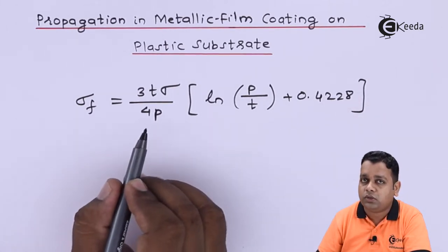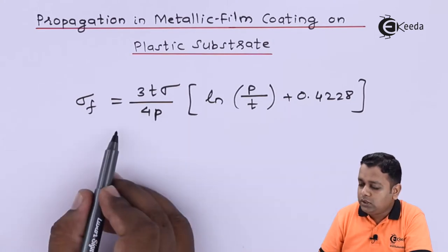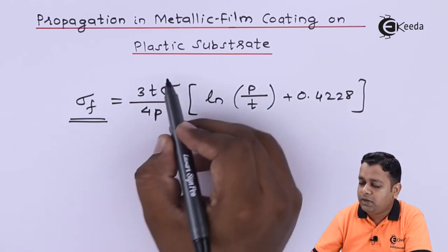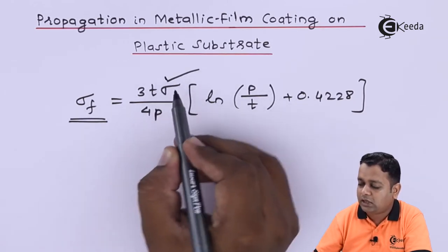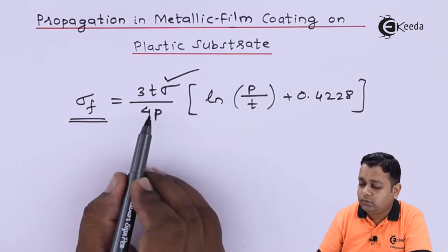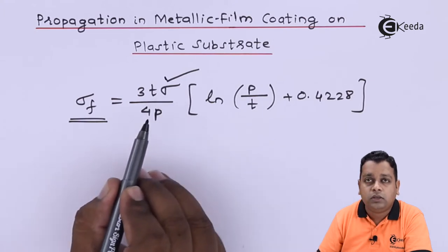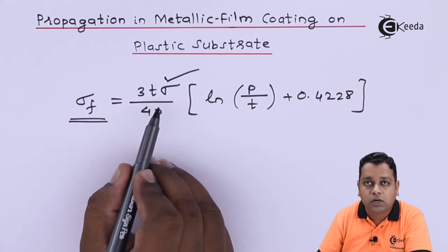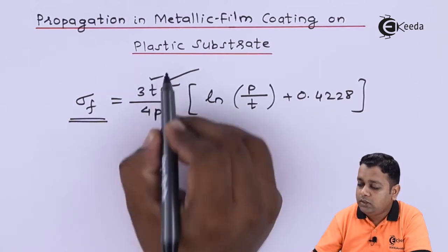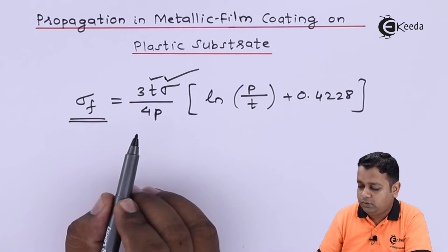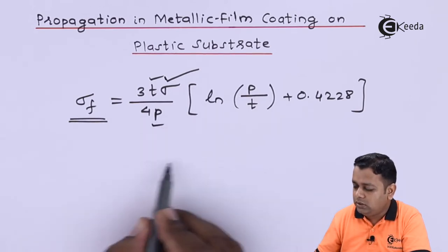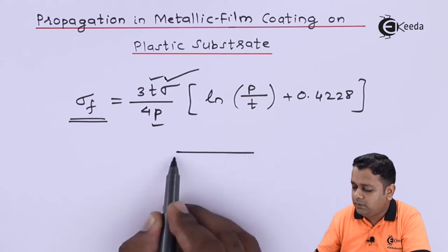In this formula, the film conductivity sigma_f depends on sigma, which is the conductivity of the bulk metal. I will provide specific values for gold, silver, and copper at the end of this video. Here, t is the thickness of the metallic film, and p is the electron mean free path.